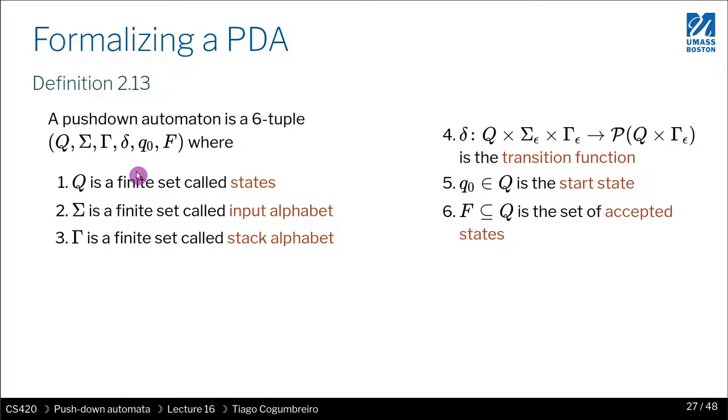So it still has a finite set of states. It still has a finite set of inputs, but now it has a new thing which is the alphabet of the stack. And this is saying that they don't have to be the same. In fact, you can even have a stack that has a completely different alphabet than the one that is in the input. So this is something to note.